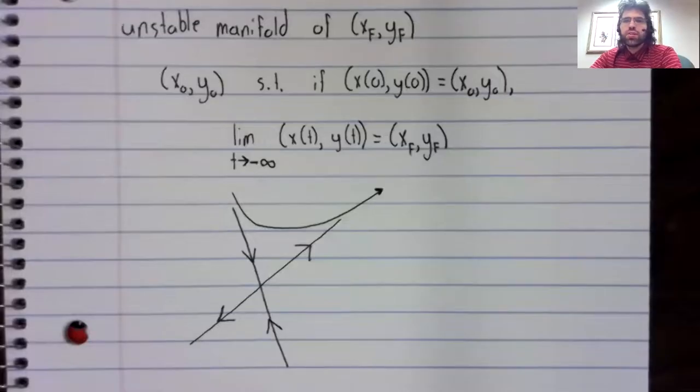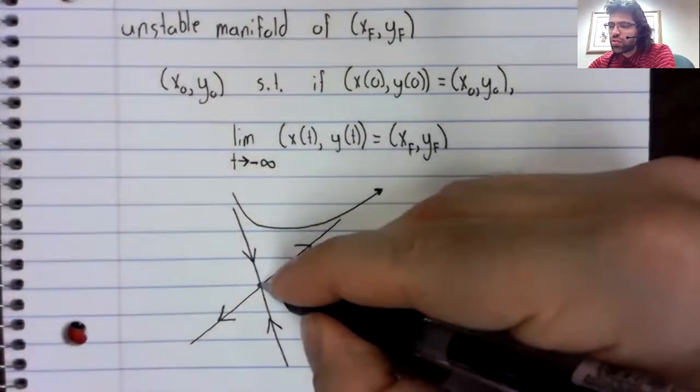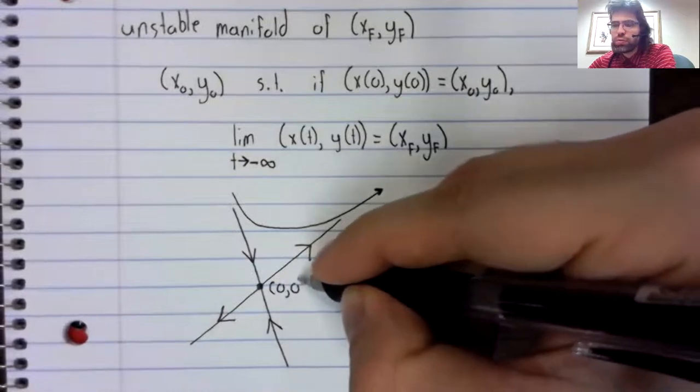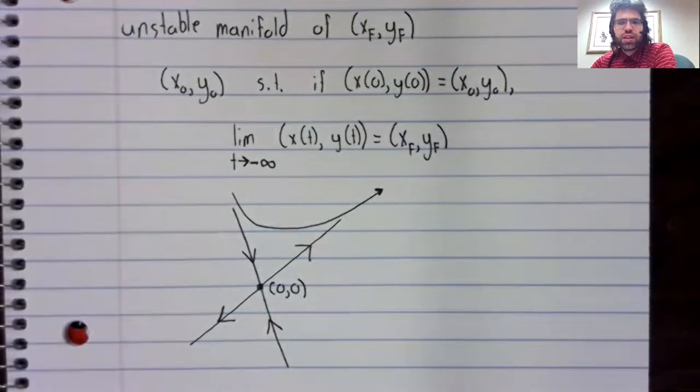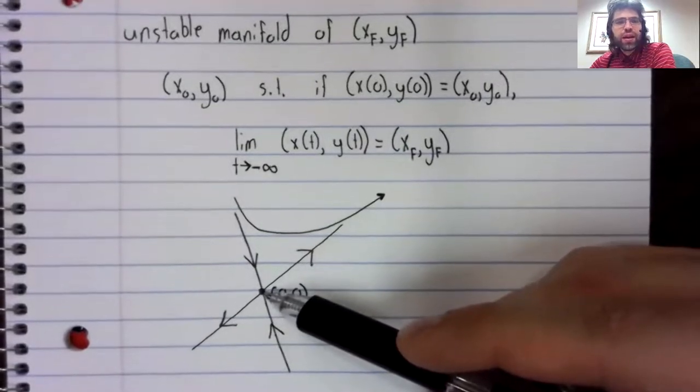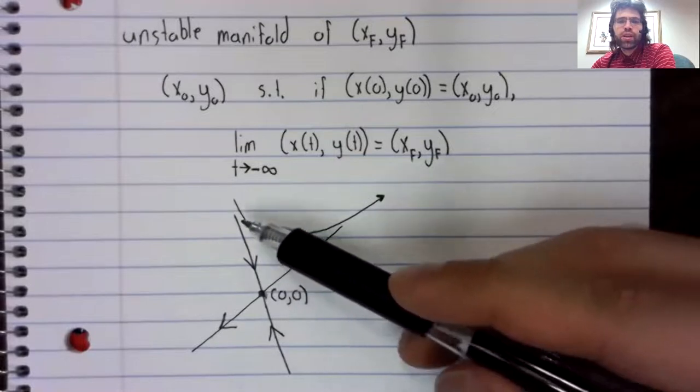We'll say this is a linear system. This fixed point is the origin, (0,0), and the origin is a saddle.